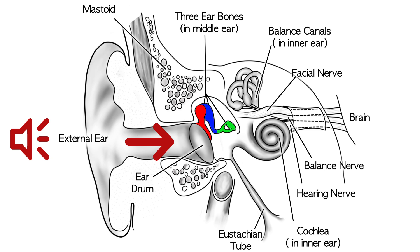The stapes, or third bone of hearing, interfaces with the hearing organ called the cochlea. Cochlea means snail shell in Greek, and you can see it's shaped like a snail shell. Within that, there are little receptor cells that receive the sound, turn it into a nerve signal, and send the message to the brain.